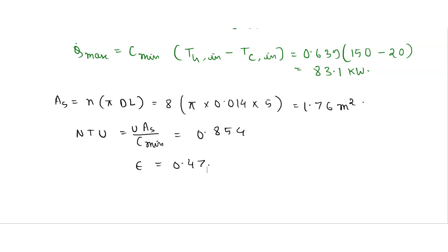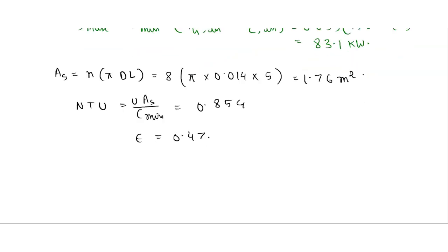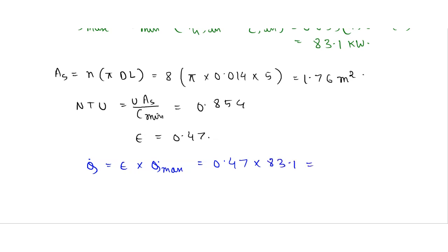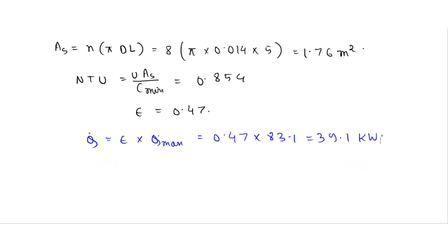Now we have the value of the rate of heat transfer. The rate of heat transfer is given by q_dot equals effectiveness multiplied by the maximum heat transfer rate. Effectiveness is 0.47 multiplied by maximum heat transfer rate of 83.1 kilowatt, giving us 39.1 kilowatt.